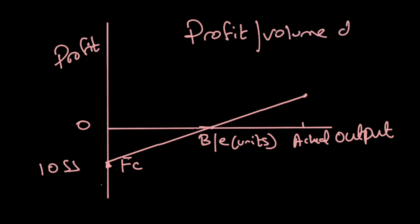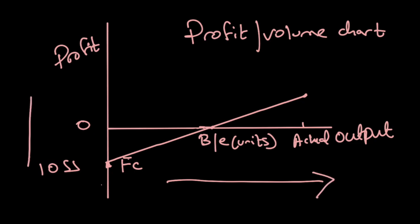The profit-volume chart shows that as the firm linearly increases its output, its profit should also increase — once you've covered your fixed cost and other costs and you're making a positive contribution. If you produce less than the breakeven point, you're in the loss region; if you produce more than the breakeven point, you're in the profit region. We can now compare the breakeven chart and the profit-volume chart to conclude this portion of marginal costing.